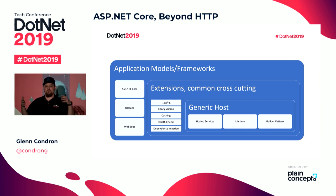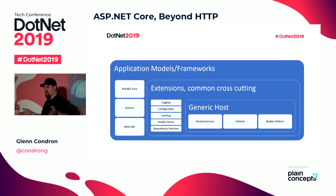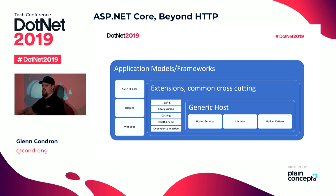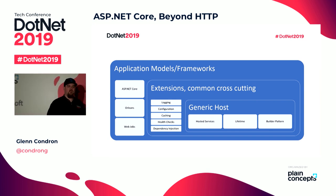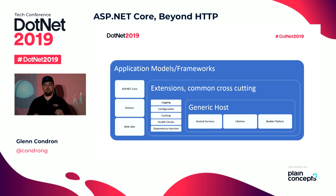At the core of it, you have Generic Host, which is basically a way it stitches together the builder pattern. So in your Program.cs you go new HostBuilder, you go UseStartup in your ASP.NET Core application today — that's the builder pattern. This gives you that. It lets you use it without any web dependencies. All that it does when you call Run is it finds anything in DI that implements the interface IHostedService and calls Start on it, and when it's going to stop it calls Stop.